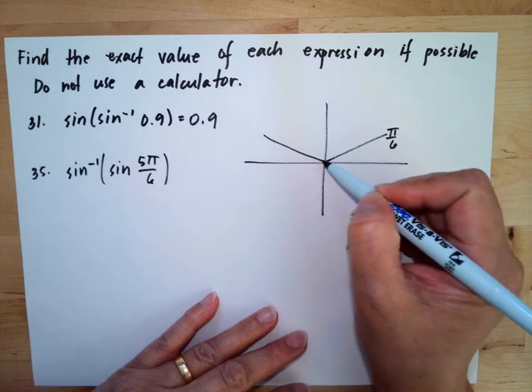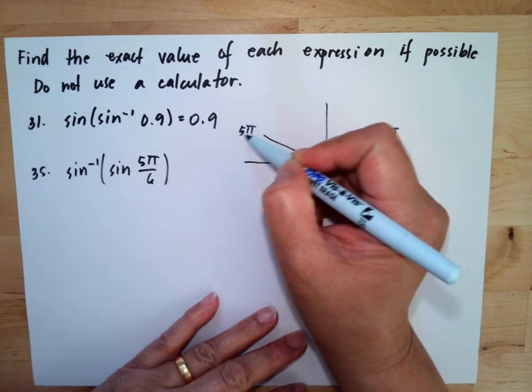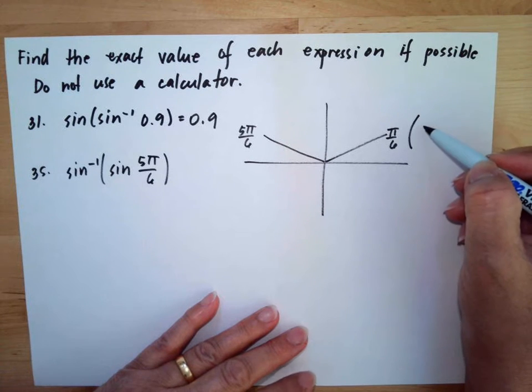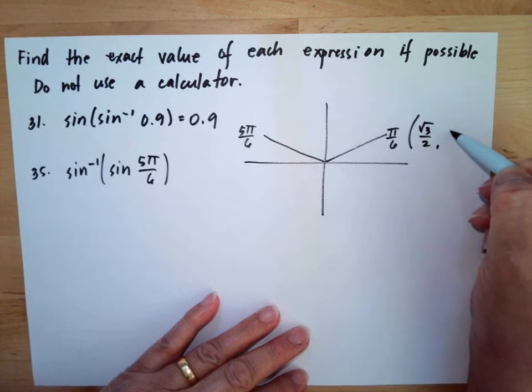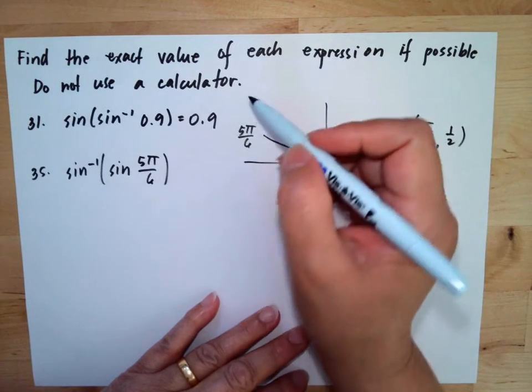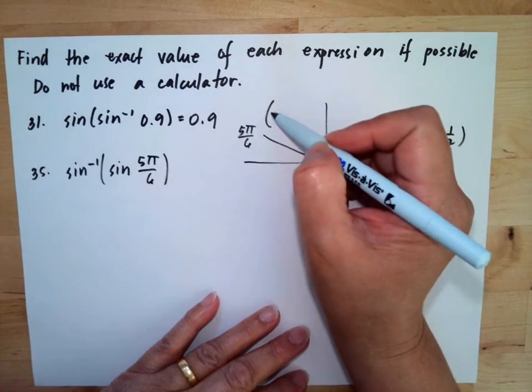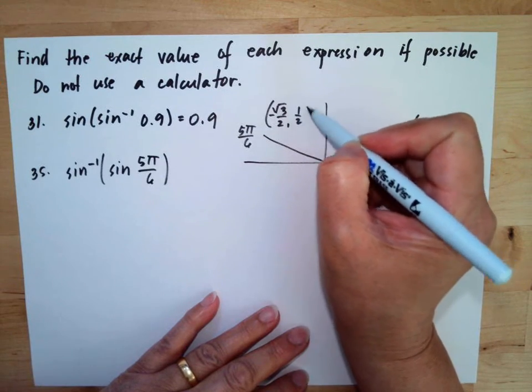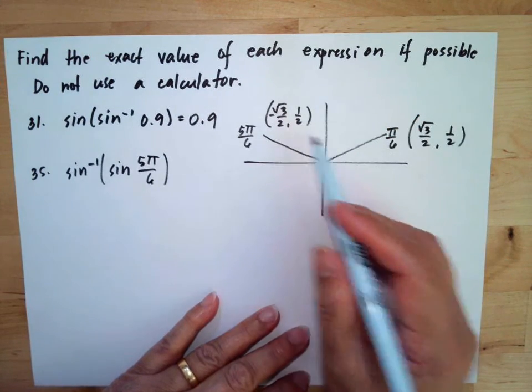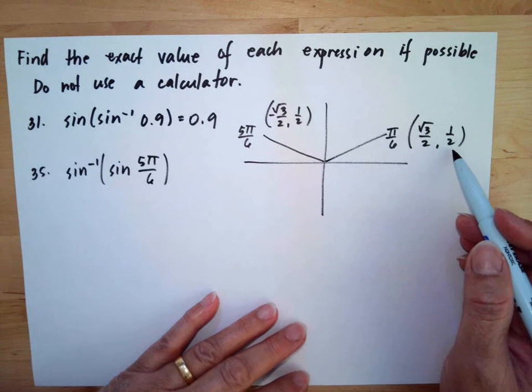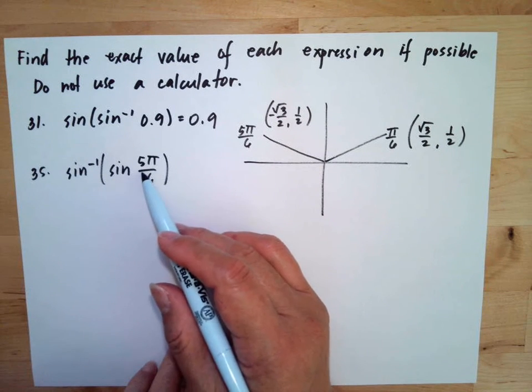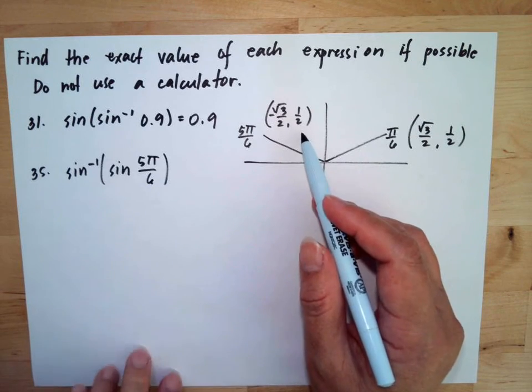This is our 5π/6. Now the coordinates of this are square root of 3 over 2 and 1 half. And here the coordinates are negative square root of 3 over 2 and 1 half. So it is sine so we have the same value. So meaning sin(5π/6) is equal to 1 half.